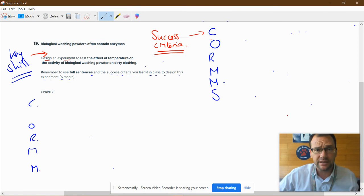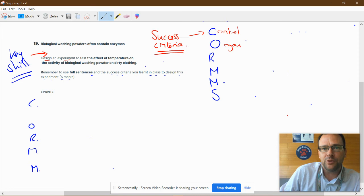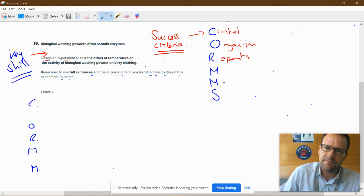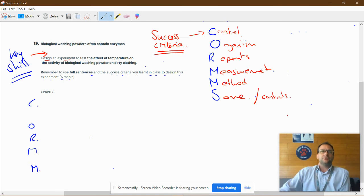The C in CORMS stands for control, O is organism, R is repeats, M the first one is measurements, second M is methods, and the S is the same as your controls. We'll go through how to do this.